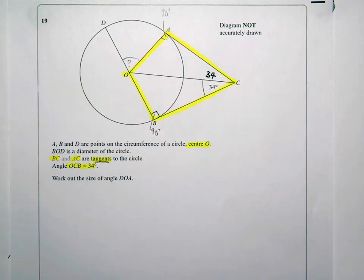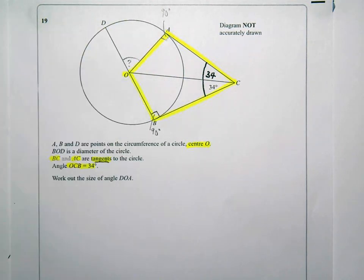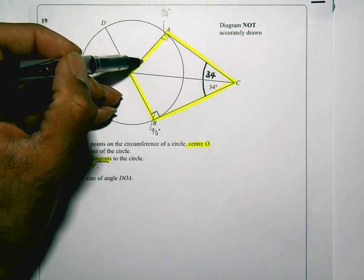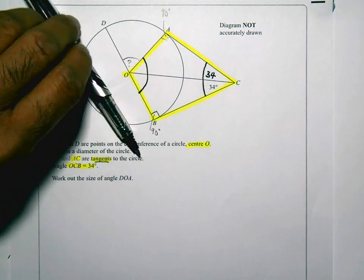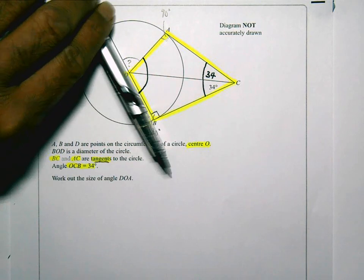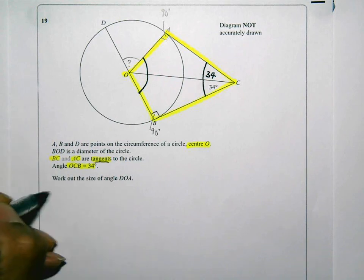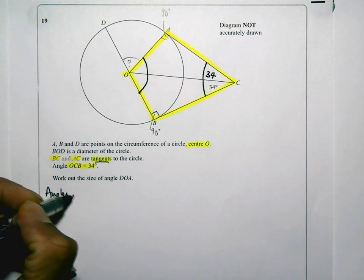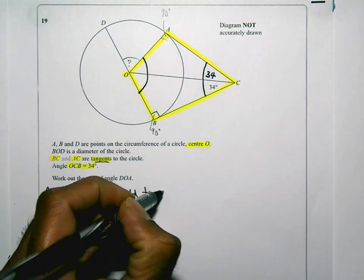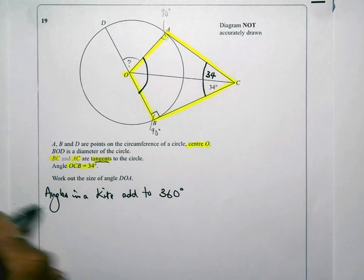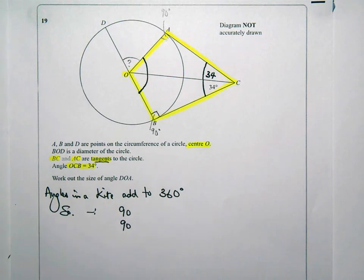Now, what I do have is inside this kite, I know all of this angle here. I know this angle is 90, I know this angle is 90. I could now work out this angle at the top. And once I do know this angle here, I could use the fact that those two angles are in a straight line and I could work out the angle that they want me to find DOA. Okay, so I'm going to put the reason for it. Angles in a kite add to 360 degrees. So what I need to do is add 90, 90, 34, and 34.